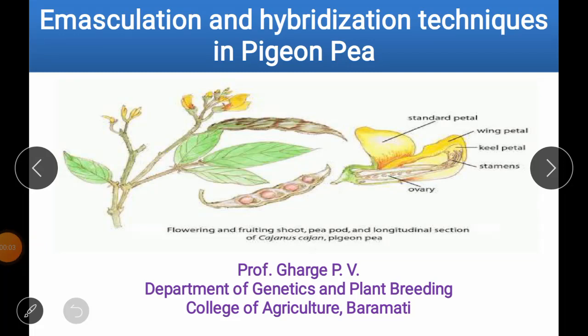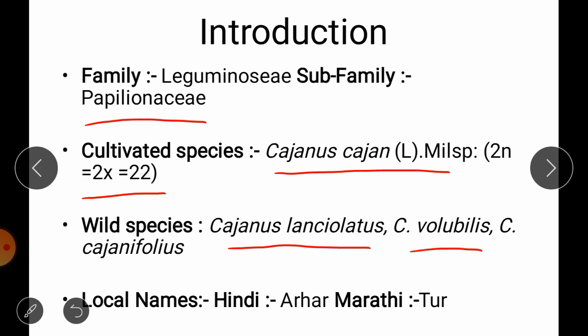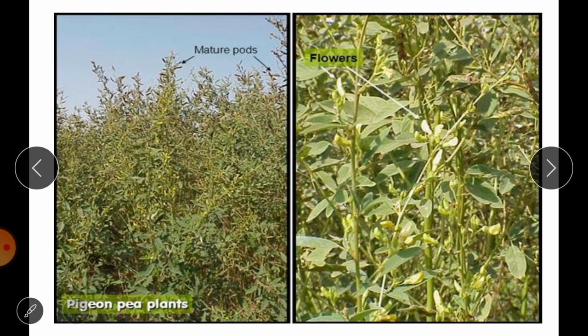Hello students, welcome back. In today's practical we are going to see about emasculation and hybridization techniques in pigeon pea. Pigeon pea is also called as toor or arhar. It belongs to the family Leguminaceae and sub-family Papilionaceae. The cultivated species is Cajanus cajan with chromosome number 2n = 2x = 22. Local names: in Hindi it is called arhar, while in Marathi it is called tur.